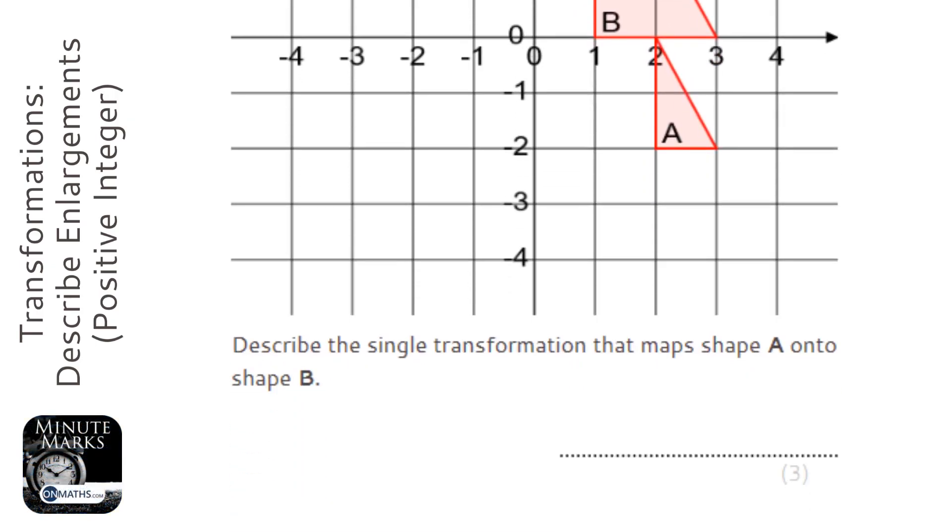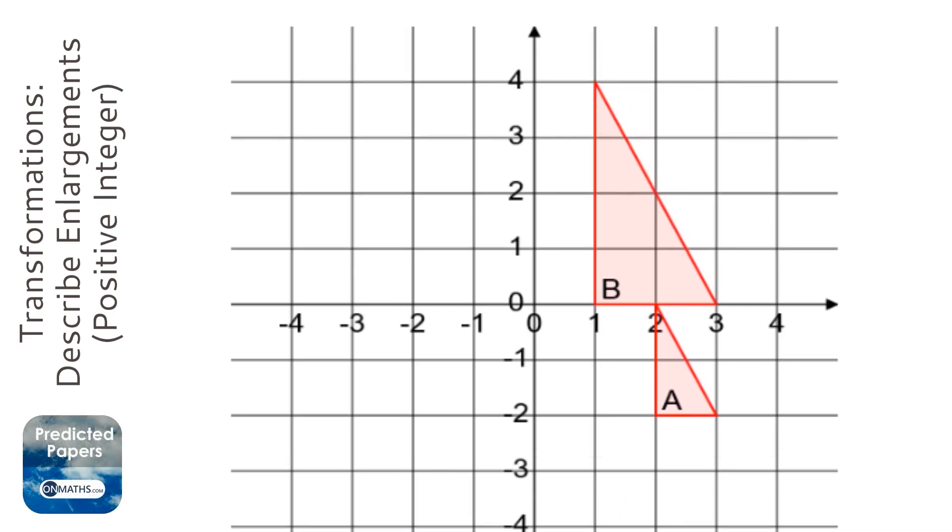We're asked to find the single transformation that goes from A to B. First things first, I ask myself a number of questions here. Question number one: has it been mirrored?